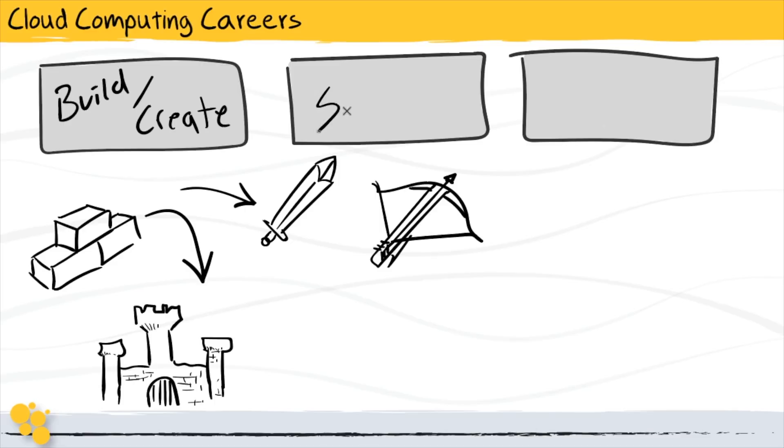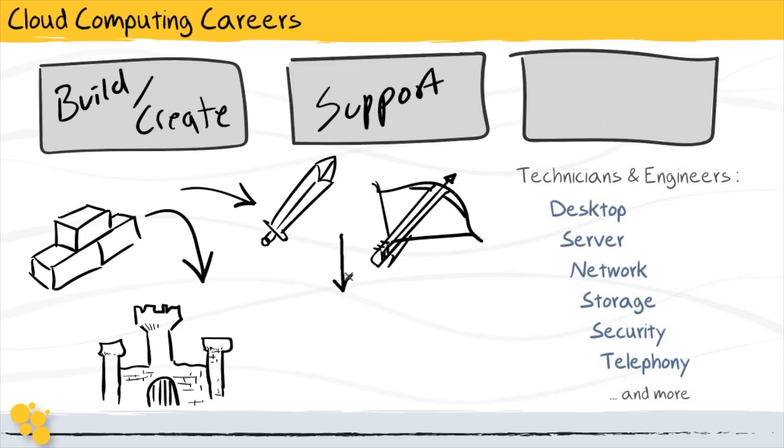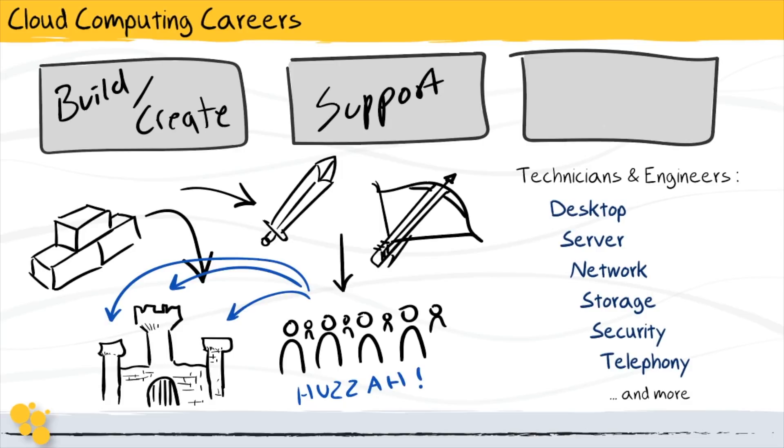Those are the support/operations roles. These are the individuals who are interacting with the tools and infrastructure on a regular basis to deliver something for the organization. Typically, these are the technician and engineer types of roles who might be supporting the network or the storage. They respond to problems that may arise and handle those day-to-day activities of operating the kingdom.